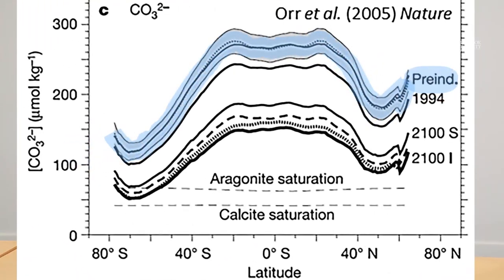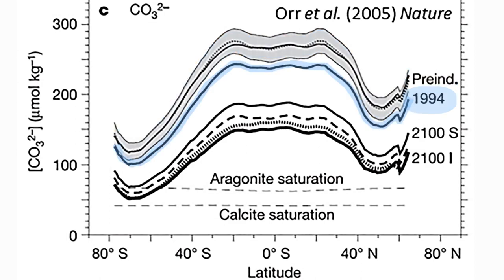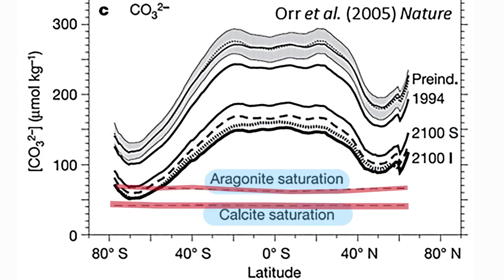From the pre-industrial level on the graph, as you move to 1994 — around a near current day prediction — we can see that carbonate ions have actually decreased across the world's oceans, from latitudes around the Southern Ocean to near the North Pole. By the year 2100, around the end of the century, these carbonate ions will continue to decrease. What this means is that we're starting to approach saturation levels. Once the graphs dip below the aragonite saturation and the calcite saturation levels, calcium carbonate structures are going to dissolve — they'll be entering a dissolution state. And even before they get there, as the saturation state falls, it makes it much harder for these animals to make their shells and skeletons.